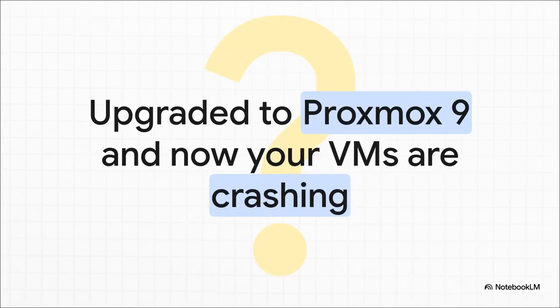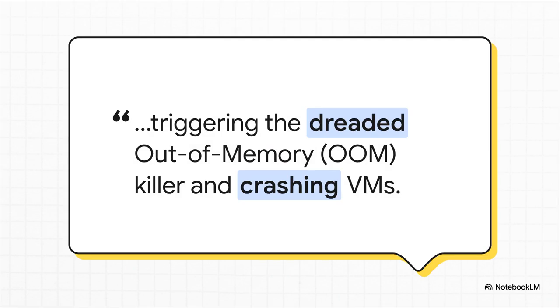Does this sound painfully familiar? You were all excited, you upgraded to the shiny new Proxmox 9, ready for all those new features — but instead, your virtual machines are just unstable. They're freezing, or even worse, crashing completely. You are definitely not alone. The forums are flooded with people reporting this exact same thing: RAM usage just keeps climbing until it triggers the dreaded out-of-memory OOM killer and crashes VMs. It's a total system meltdown.